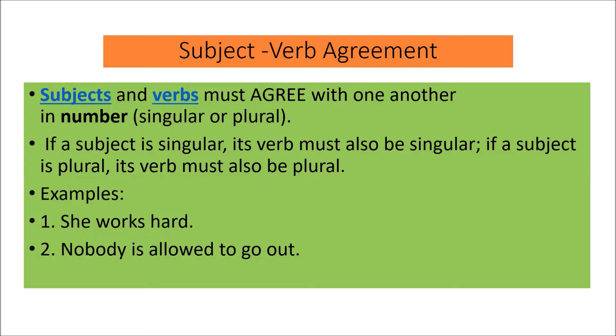'Nobody is allowed to go out.' So 'nobody' is singular. Words like 'nobody' and 'somebody' should have singular verbs. That's why it's written 'nobody is allowed.'